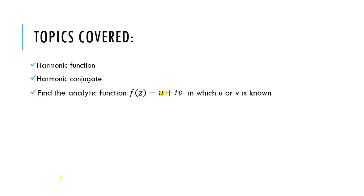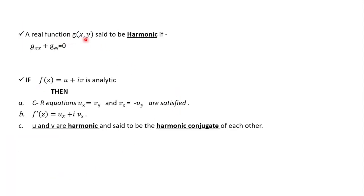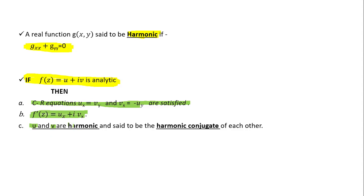A real function g(x, y) is said to be harmonic if g_xx plus g_yy equals 0. The key result we use is: if f(z) = u + iv is analytic, then the Cauchy-Riemann equations u_x = v_y and v_x = -v_y are satisfied, and f'(z) = u_x + iv_x.